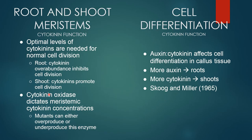Root and shoot meristem: an optimum level of cytokinins is needed for normal cell growth and division. In the case of roots, cytokinin overabundance inhibits cell division, whereas in the case of shoots, cytokinin promotes cell division. Cytokinin oxidase dictates meristematic cytokinin concentration. Mutants can either overproduce or underproduce this enzyme.